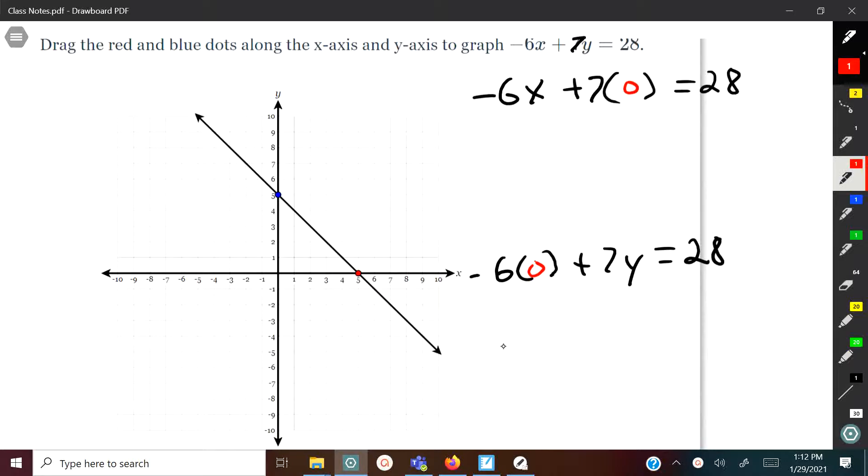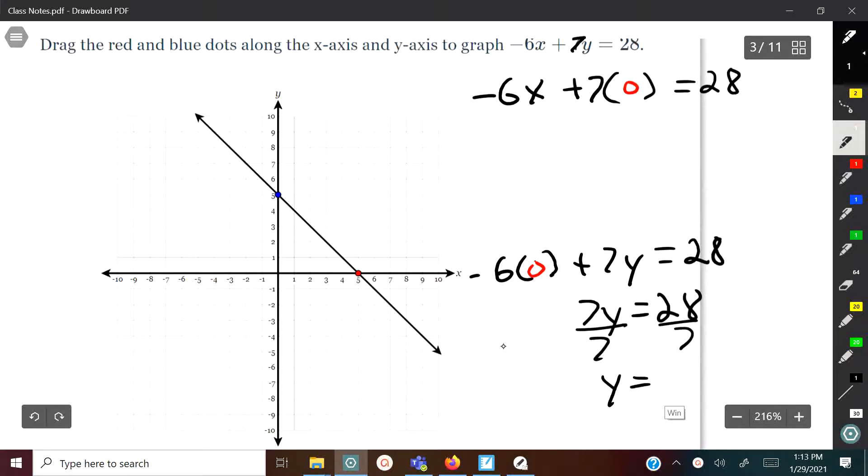I'll plug this in. Negative six times zero is zero, so that's going to leave me with 7y. Change my color back. Seven y is equal to 28, and then divide by seven, and y is equal to four. So when x is zero, y is four.